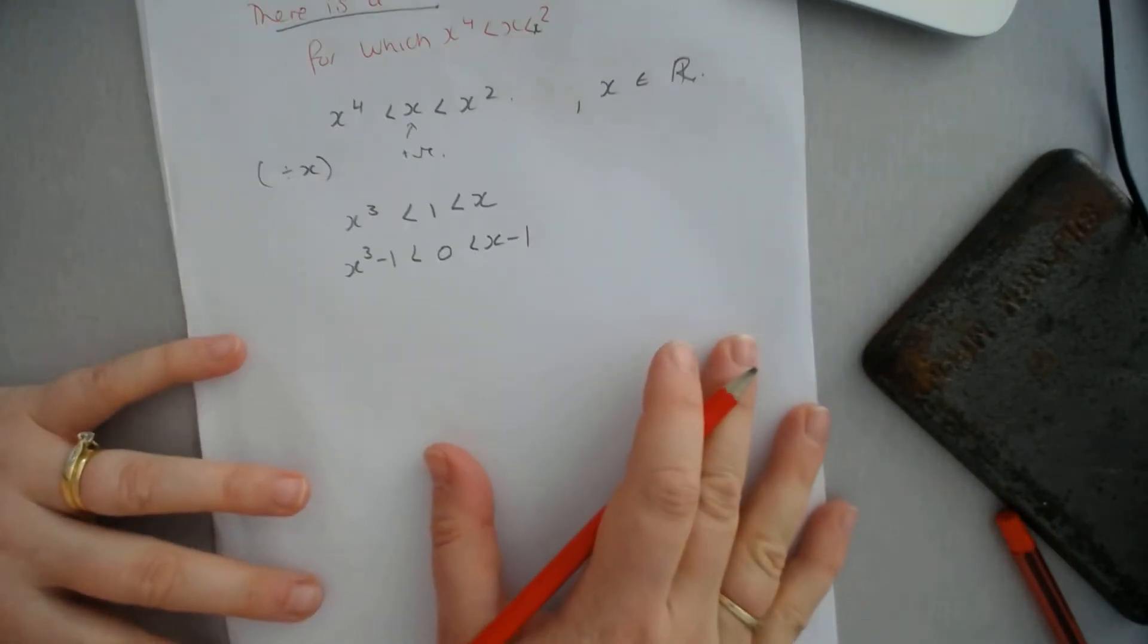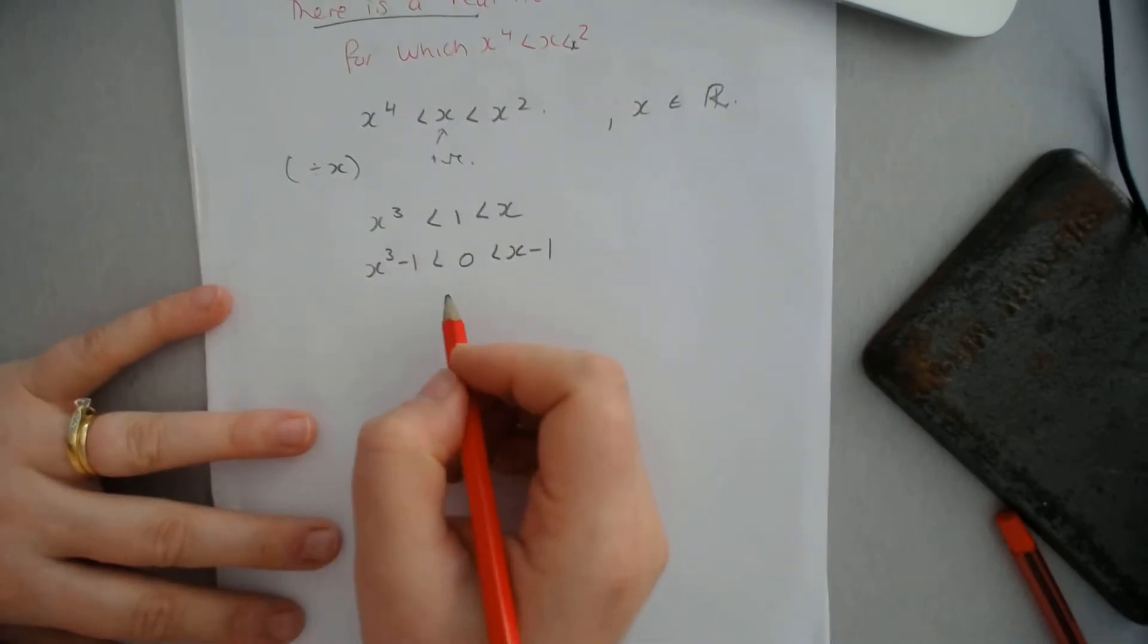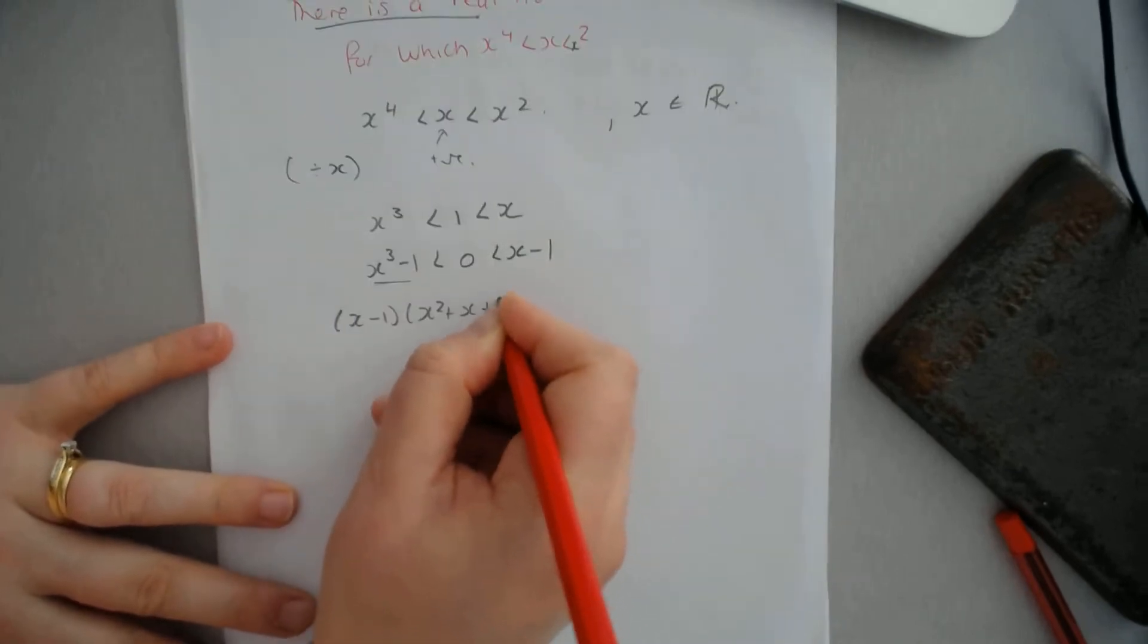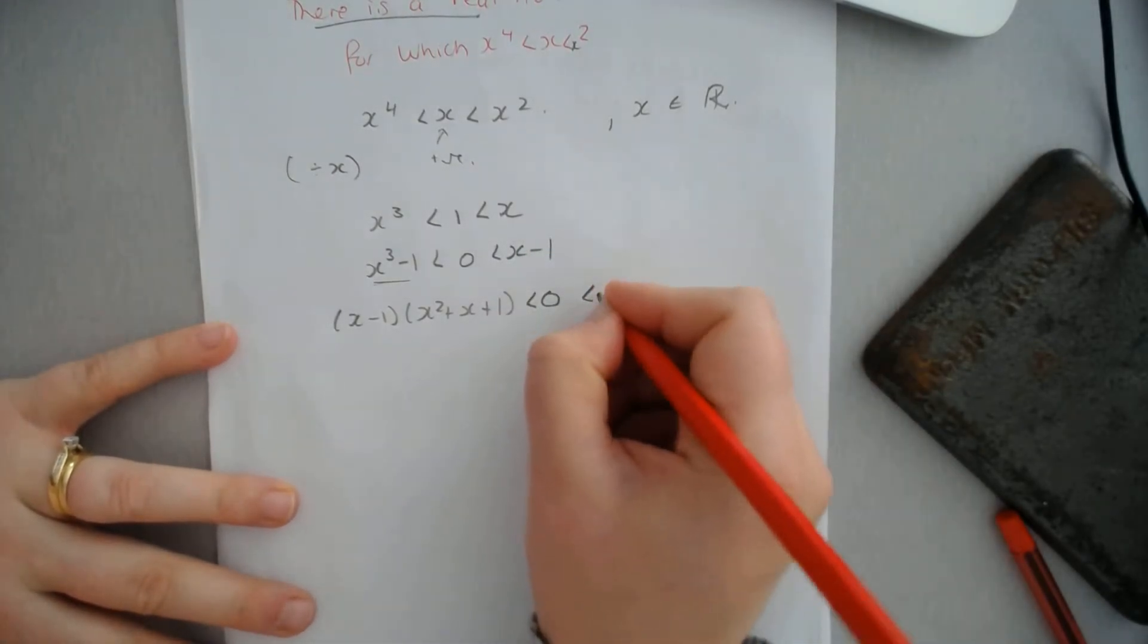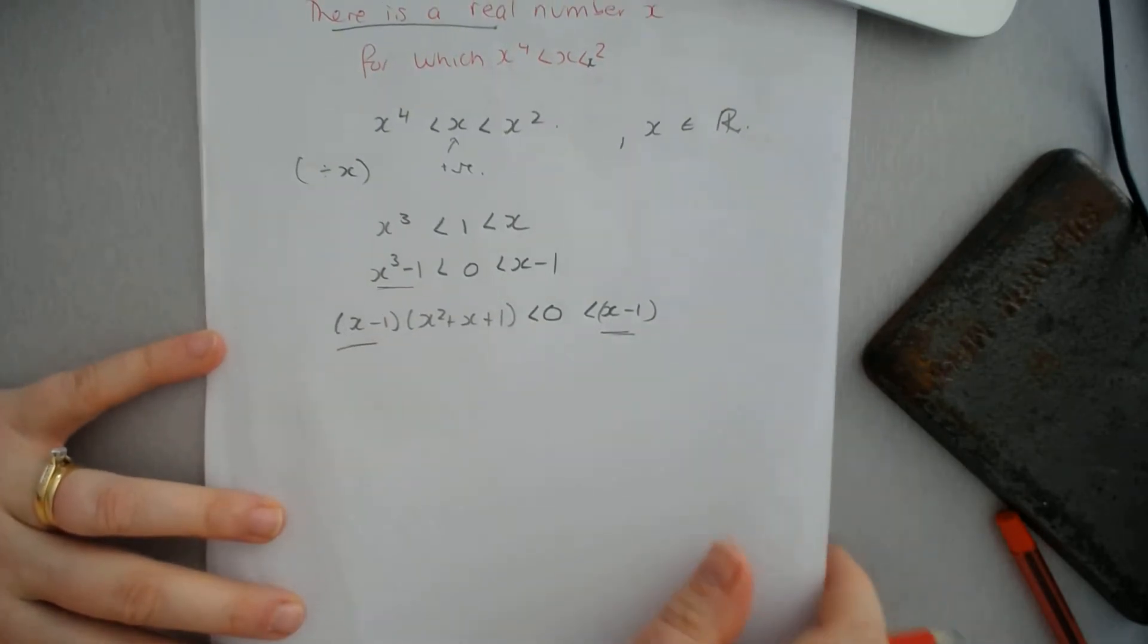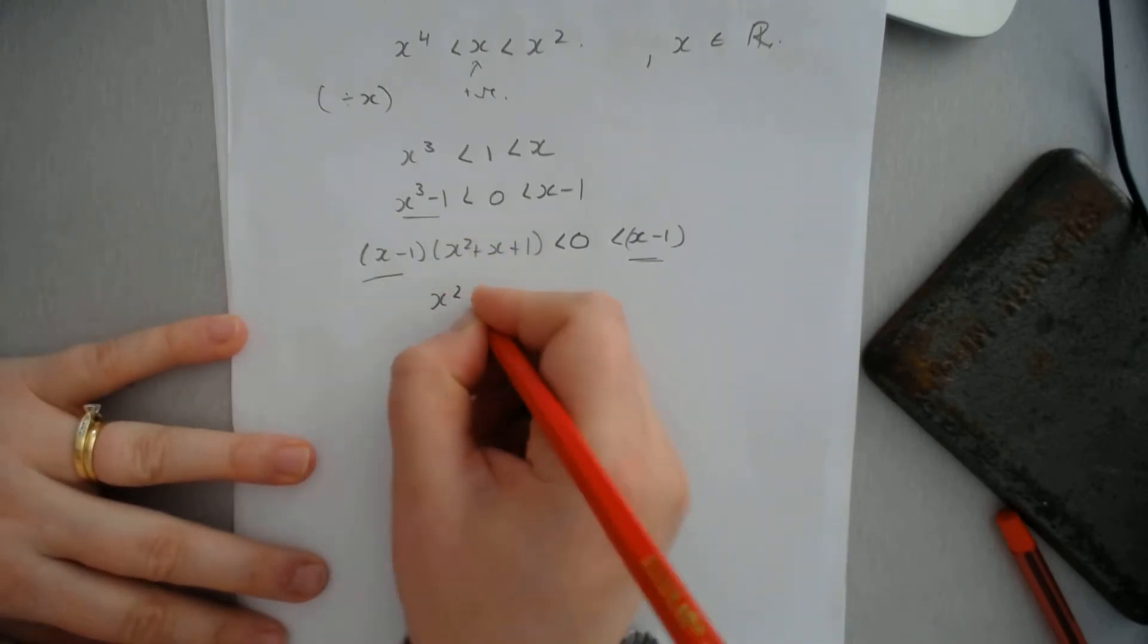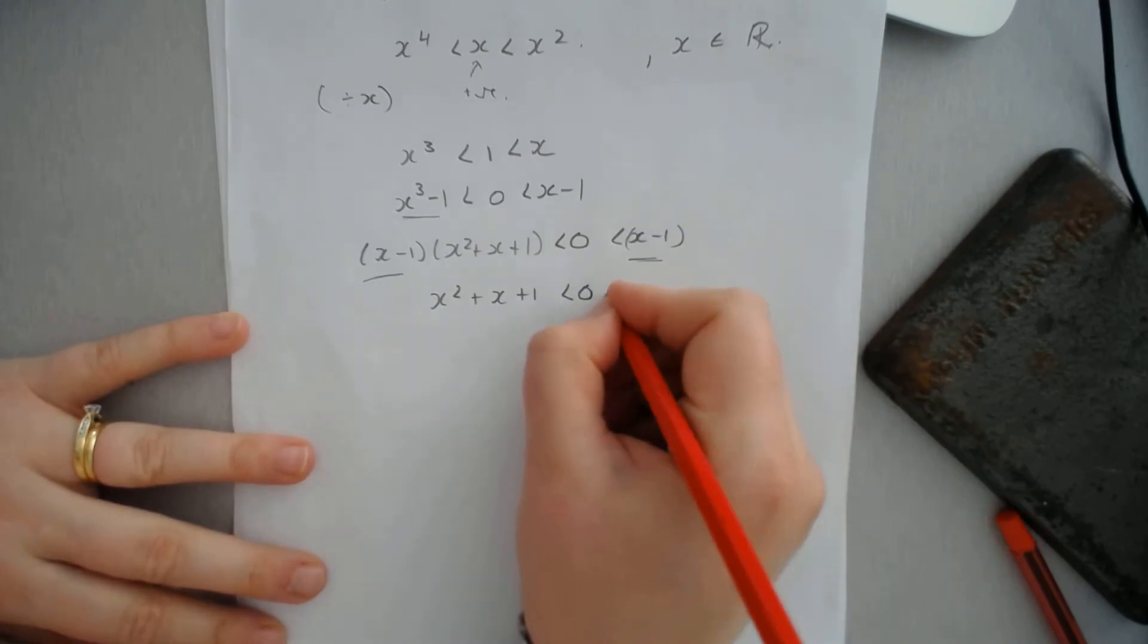From this point, what we can do is actually factorize this. So what we get is (x minus 1)(x² plus x plus 1) is less than 0, which is less than x minus 1. What's common to both of these is the x minus 1. So we're going to simplify by dividing through by x minus 1, and we get x² plus x plus 1 is less than 0, is less than 1.